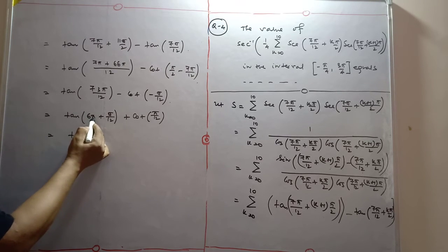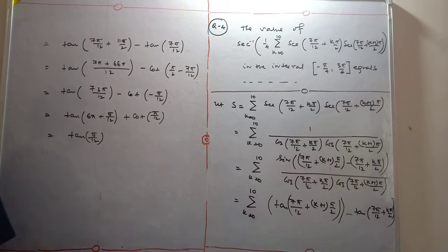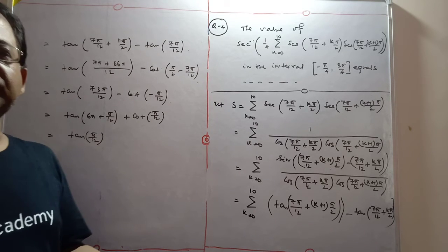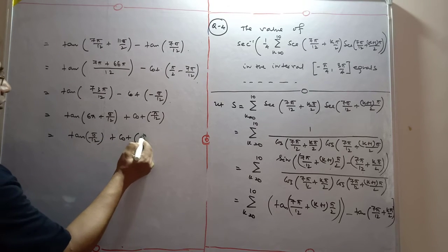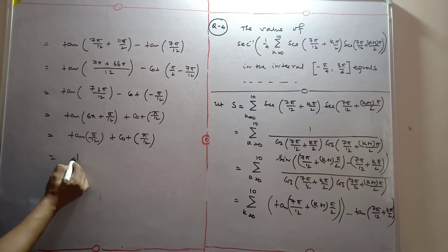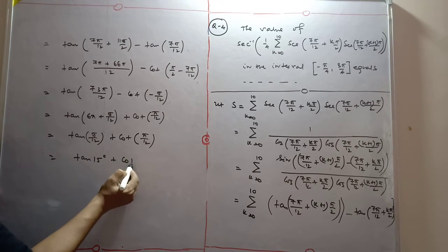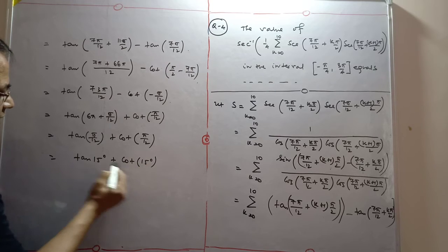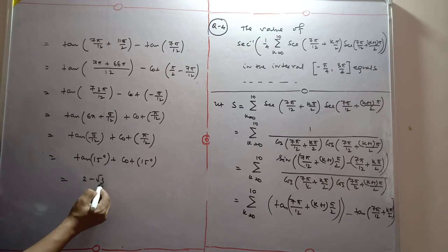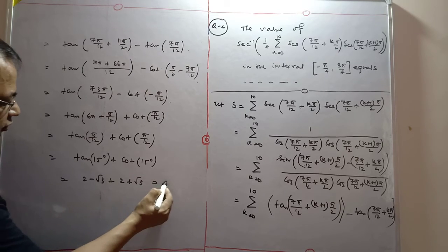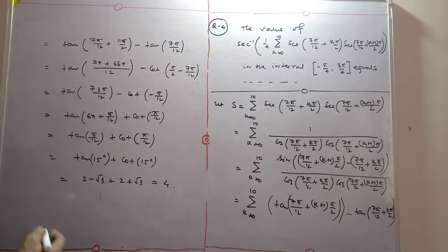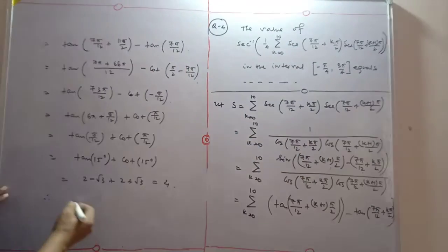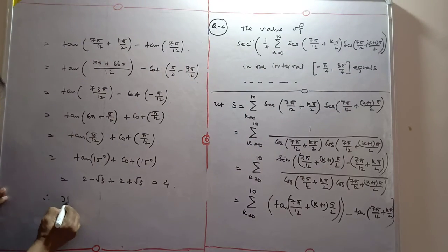So we have cot(π/12) and tan(π/12), i.e., cot(15°) and tan(15°). Now tan(15°) = 2 − √3 and cot(15°) = 2 + √3, so the product is (2 − √3)(2 + √3) = 4 − 3 = 1. Hence the value of S was established.